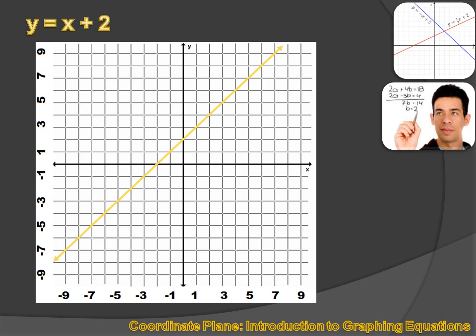This line represents every combination of x value and y value that satisfies the equation y equals x plus 2. Well, let's explore that a little further. What if x equaled 1? What would y equal? Well, that's easy to figure out. We just substitute 1 for x. We get y equals 1 plus 2 or y equals 3.